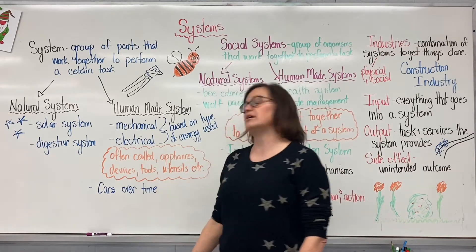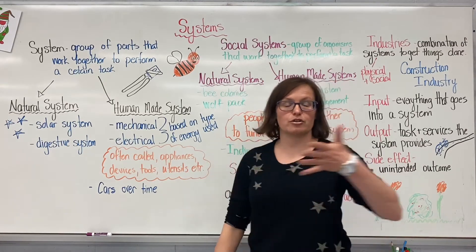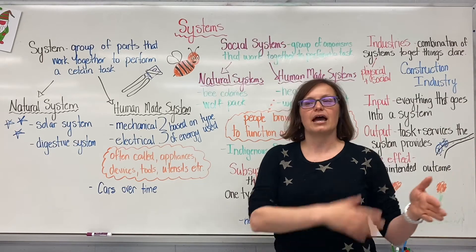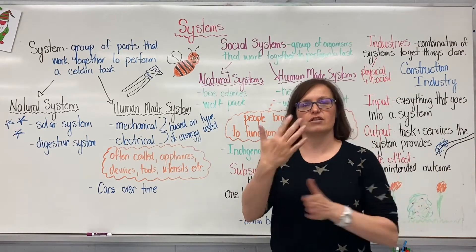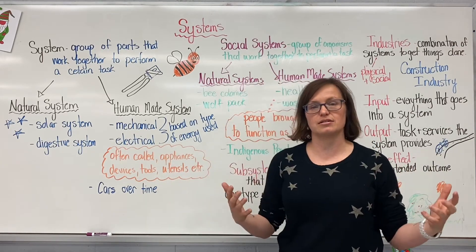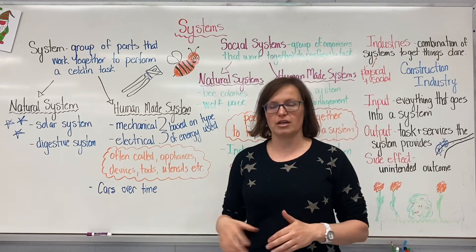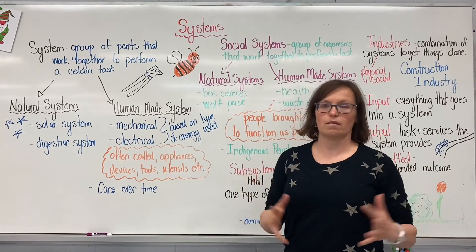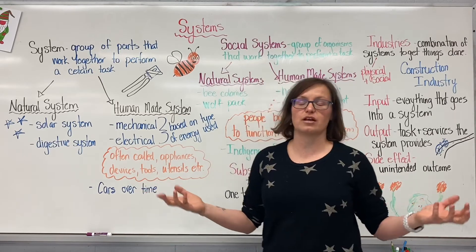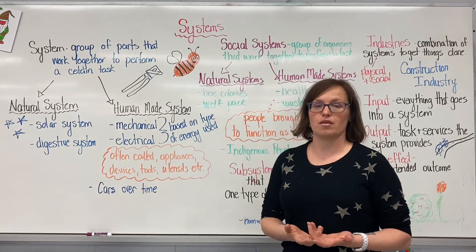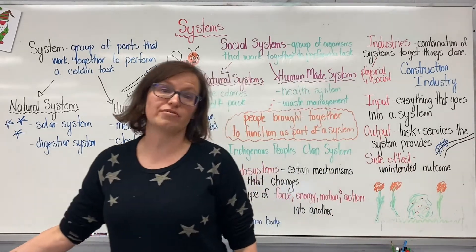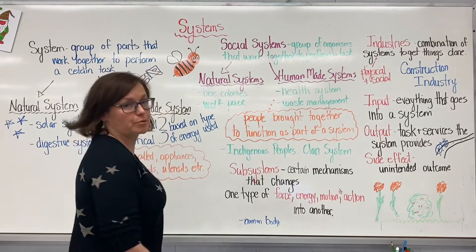Another example would be cars. If we think about how cars began and all of the innovations and changes that have been made to the car as a system, it's become more efficient and helps us do way more things in our life. We've gotten to the point where cars now have so much technology in them that they can drive themselves. So systems will often change and improve over time as well.